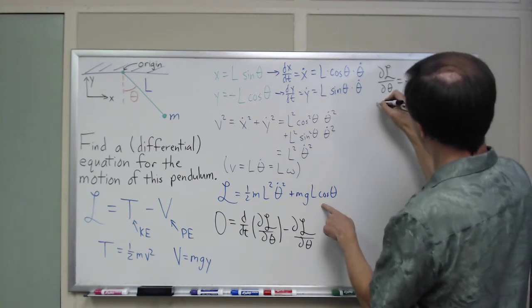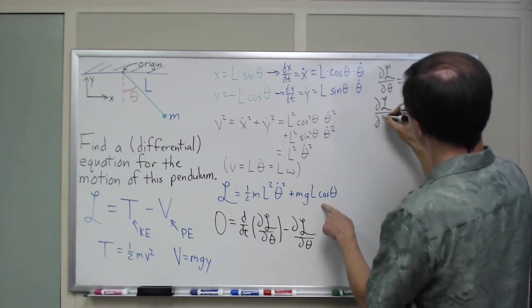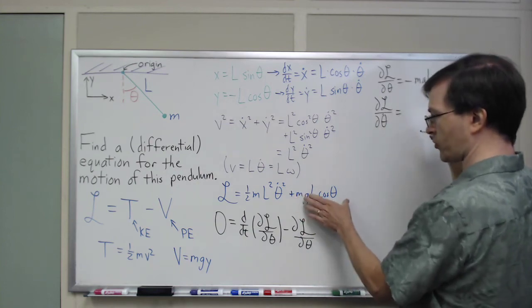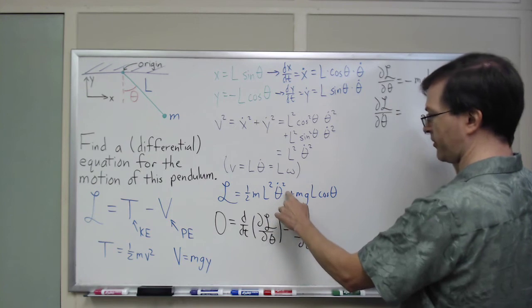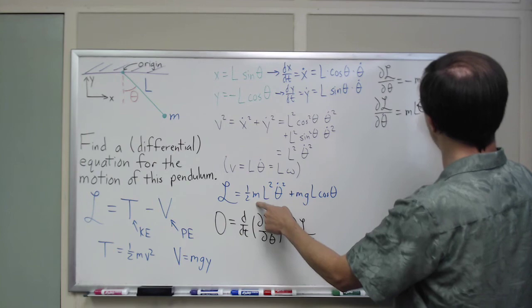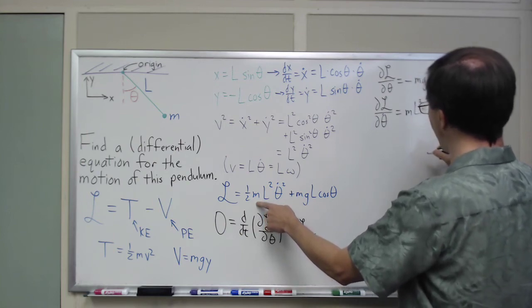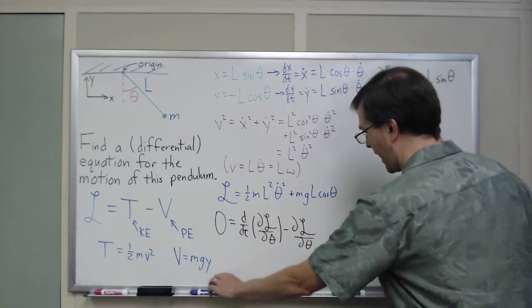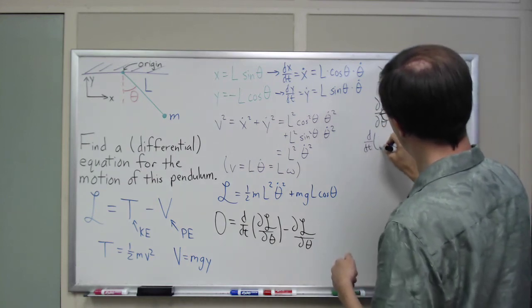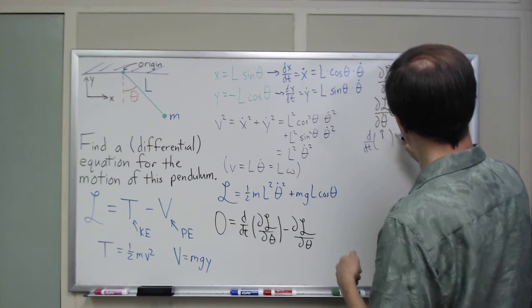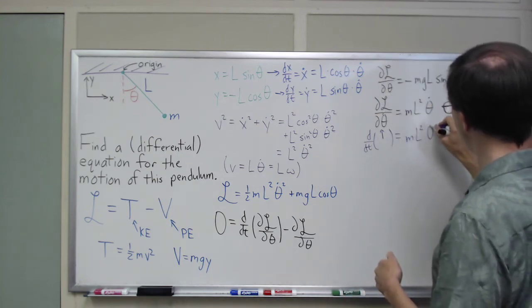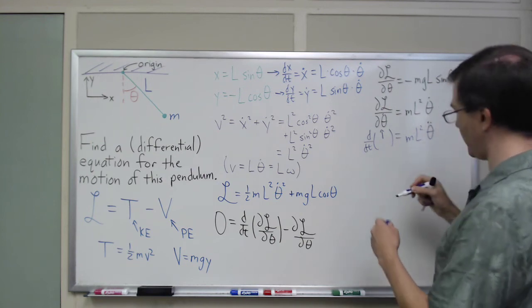And dL d theta dot equals, this term goes away here, derivative of theta dot squared is two theta dot, so this is going to be mL squared theta dot. And then d by dt of that, the time derivative of this is just, those are constants, mL squared, theta double dot.